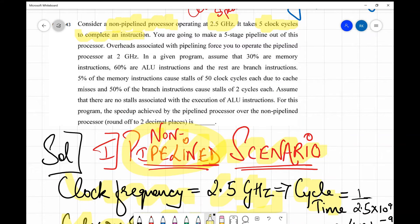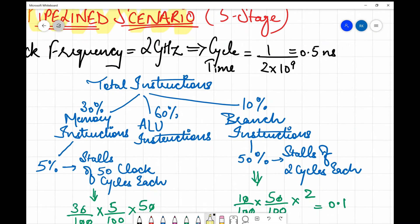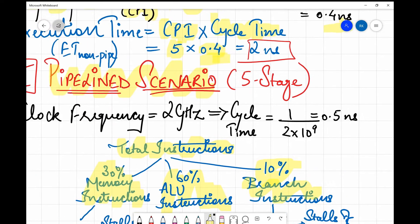Similarly we'll find out for pipeline scenario. In the case of a pipeline scenario, overheads associated with pipeline force you to operate the pipeline processor at 2 gigahertz, so the clock frequency is 2 gigahertz. Then it's given that in the program, assume 30 percent are memory instructions, 60 percent are ALU instructions and rest are branch instructions. So we draw this scenario - these are the total instructions: 30 percent memory instructions, 60 percent ALU and the remaining 10 percent are branch instructions.